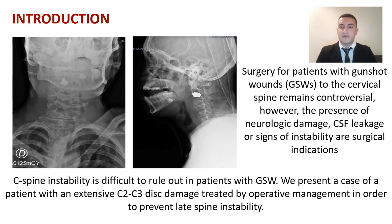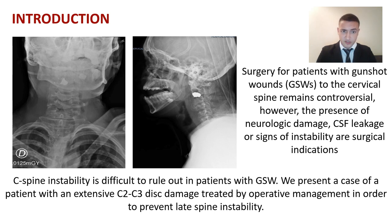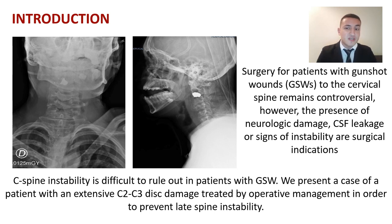Surgery for patients with gunshot wounds to the cervical spine remains a controversial topic. However, the presence of neurological damage, cerebrospinal fluid leakage, or signs of instability are surgical indications. On the cervical spine, instability is difficult to rule out in patients with gunshot wounds, mainly because often they also have other gunshot wounds or brain damage that complicates the examination of the patient.